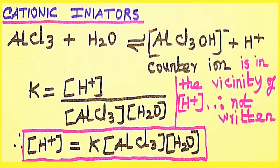The cationic initiators for cationic addition polymerization are similar to free radical initiators. They are cationic initiators — for example, strong Lewis acids, which are electron acceptors. In the presence of a small quantity of water, an H+ ion is produced. This cationic species, the H+ ion, is involved in initiating the cationic addition polymerization reaction.